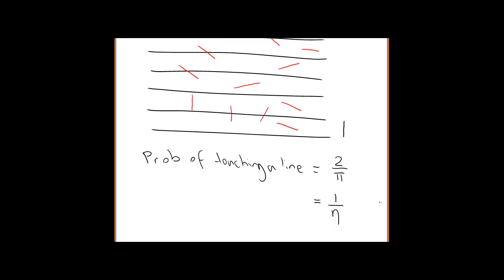And sometimes it hits the lines and sometimes it doesn't. What do you think the probability of your needle hitting one of the lines is? You know what? In our old notation using pi, we can write that probability down. The probability of touching a line is 2 on pi, which is 1 in eta. Not 1 over pi or 1 over tau, but 1 over eta instead.